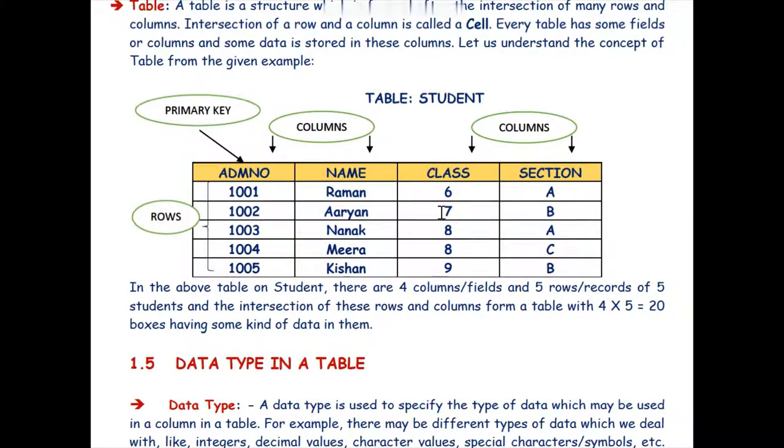As you can see on your screen we have a table named student in which we have 5 records of 5 students. The columns are admission number, name, class and section.